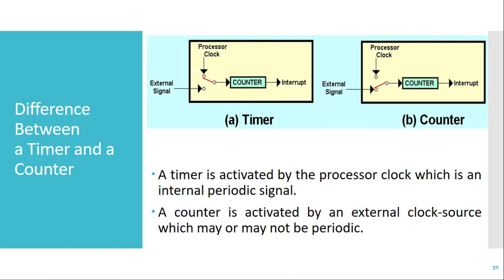The basic difference between a timer and a counter is the clock input. Internally both have registers called counter registers, but the clock pulse given to these registers is different. For a timer, the CPU clock or processor clock is given as input to the counter registers, whereas for a counter the clock input is taken from an external signal. This clock signal given to the counter register decides the mode of operation. The timer in 8051 can be operated in two basic modes: it can be used as a timer or as a counter.